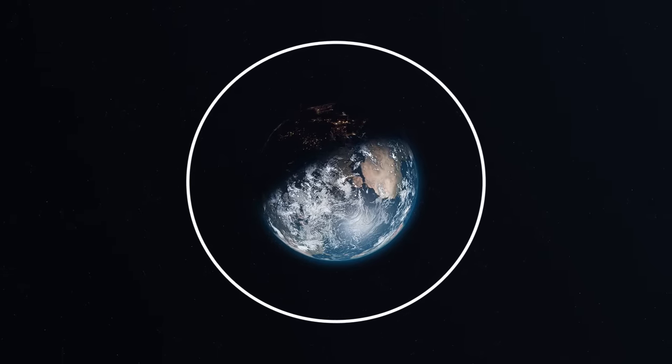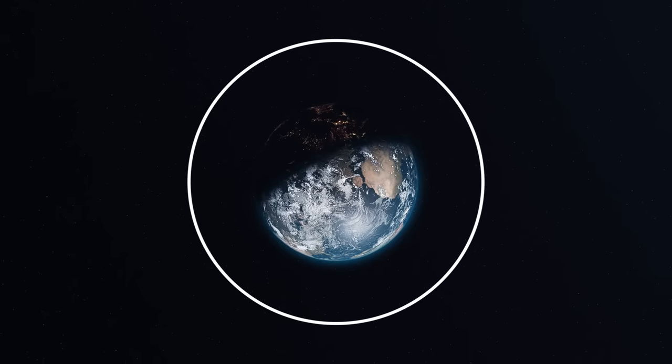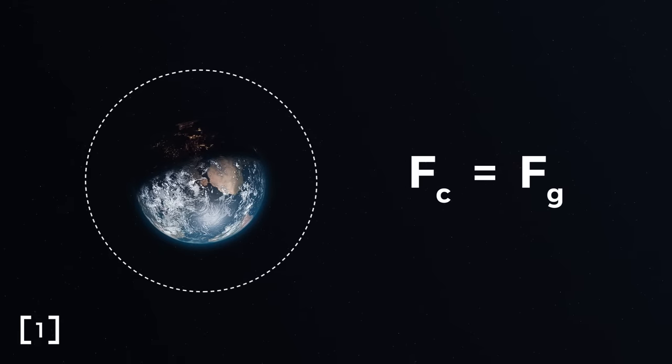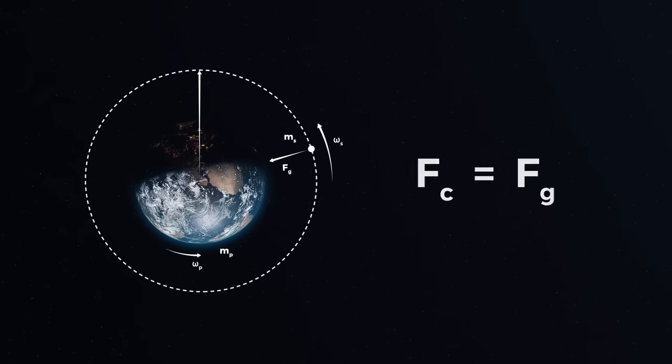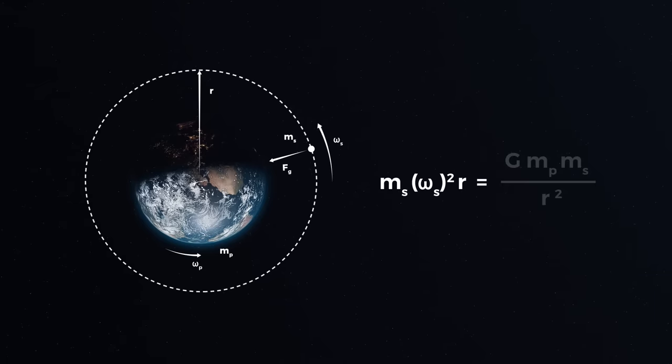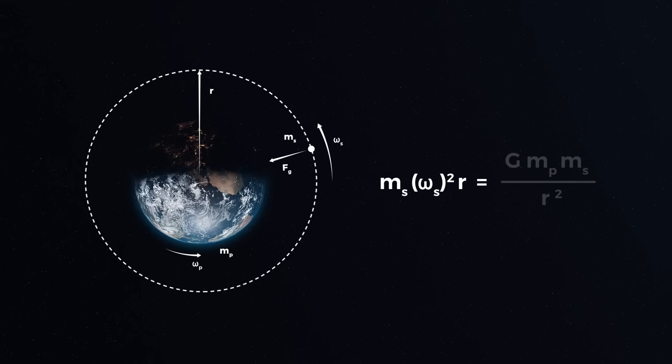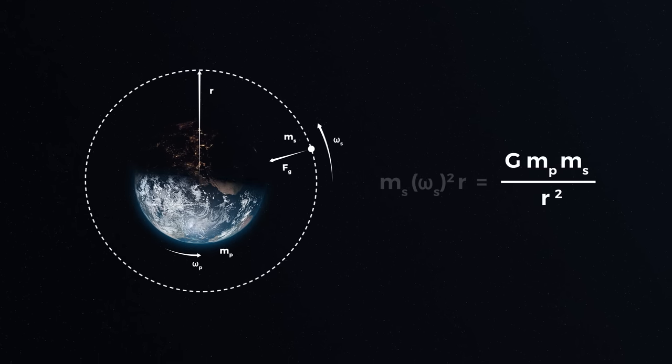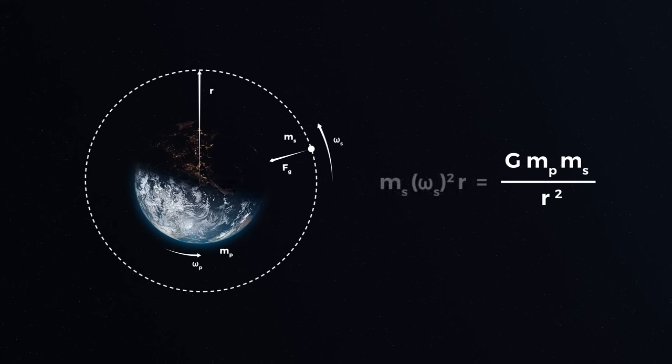We can find an orbit that will achieve this with some simple algebra. To remain in a steady circular orbit, we need our centrifugal force to equal the gravitational force. Centrifugal force is defined by this equation, where ms is the mass of the satellite, omega is the angular velocity and r is the distance to the centre of the Earth. While the force due to gravity is defined by this equation, where g is the gravitational constant and mp is the mass of the planet.